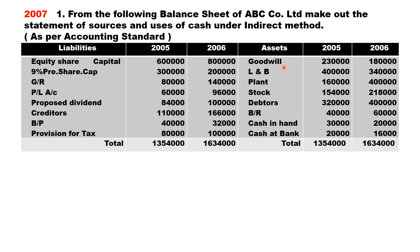Goodwill comes under operating activity — last year two lakh thirty thousand, current year one lakh eighty thousand, a decrease of fifty thousand, which indicates goodwill written off. Land and building, and plant accounts need to be prepared because there are adjustments related to both, and they come under investing activity.